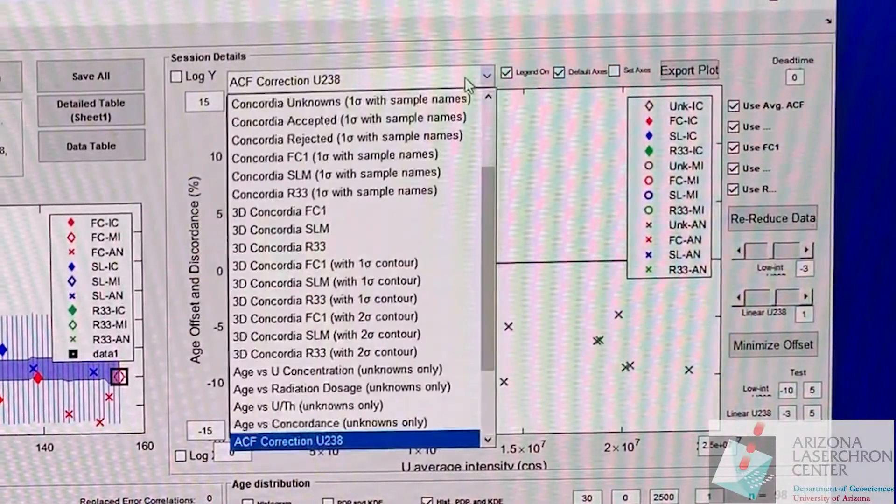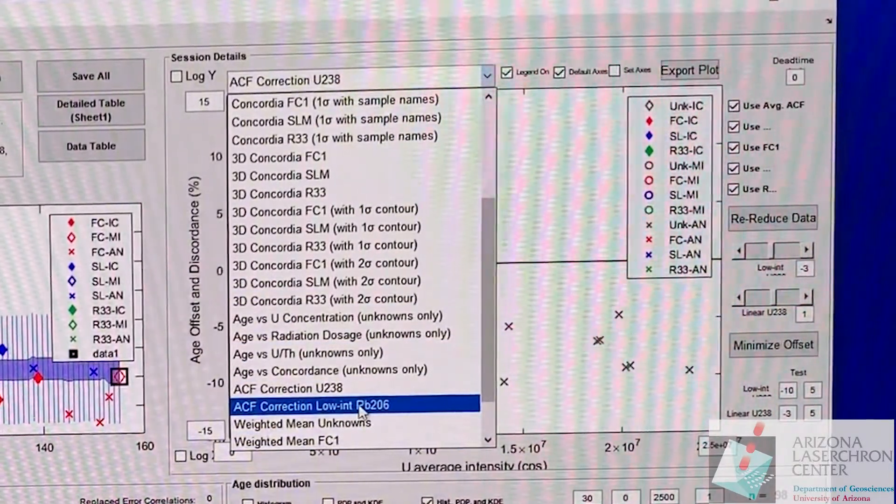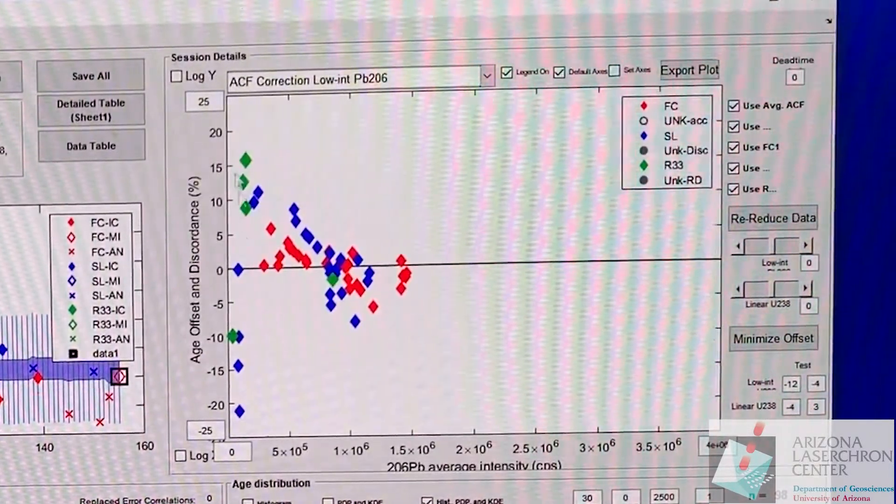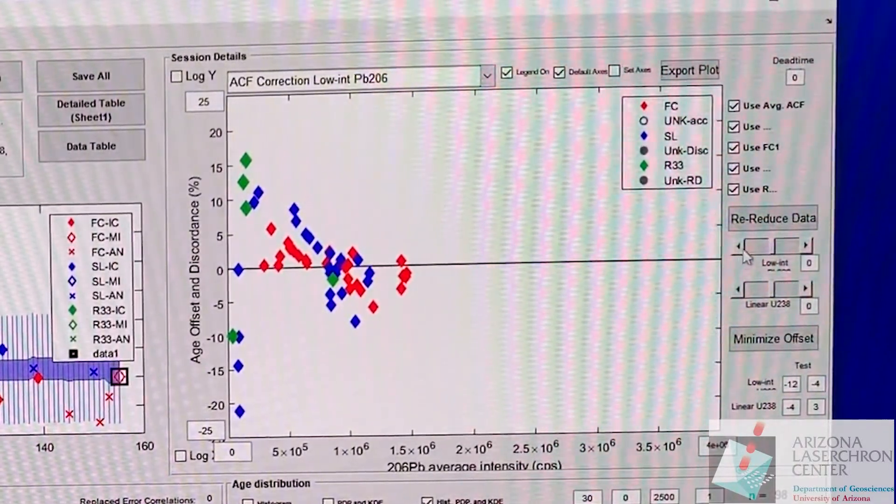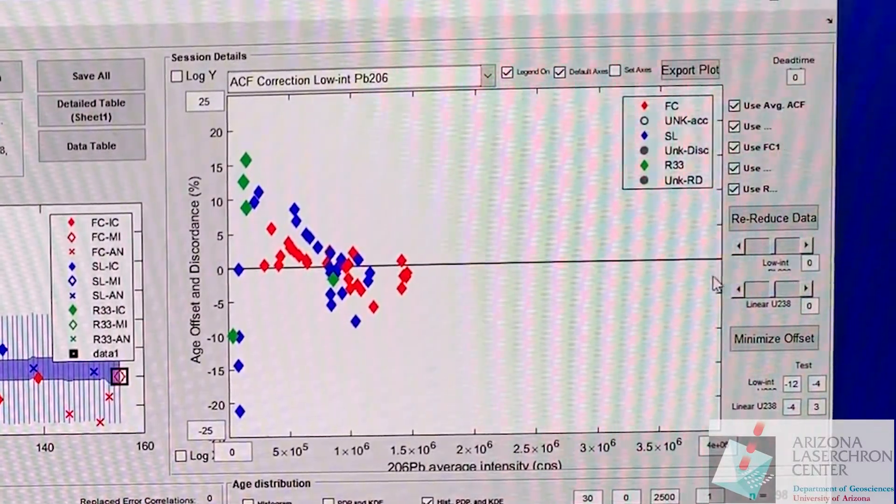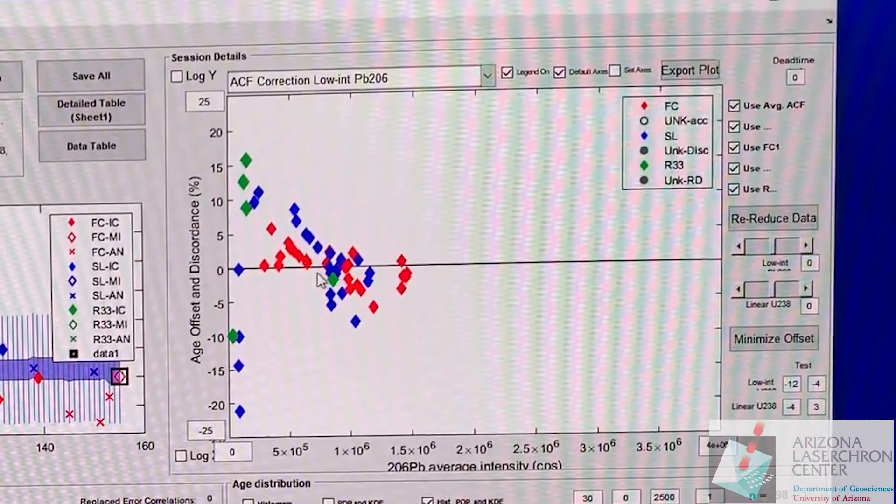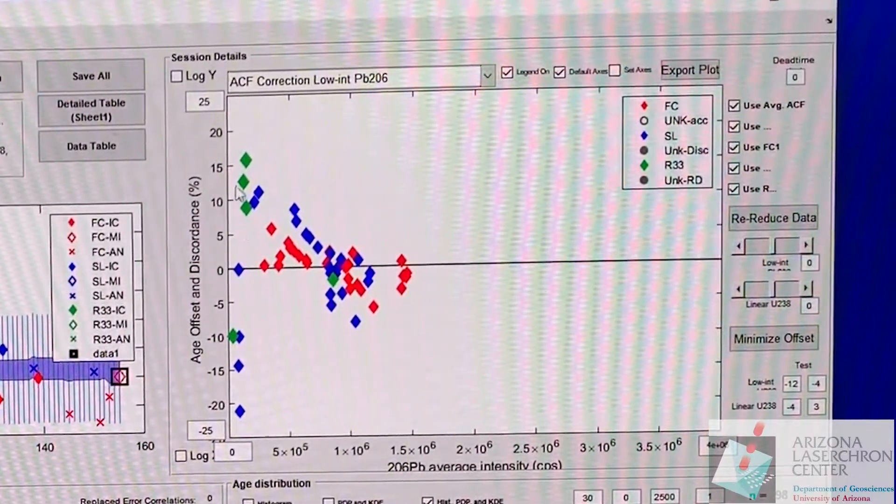The other thing you might want to look at is the ACF correction for Pb 206. Now this one is extremely sensitive. I would say don't change this very much because it's really going to affect your oldest age population even if it starts to make the younger ages look good. I would tread lightly with this one and talk to one of the minders.